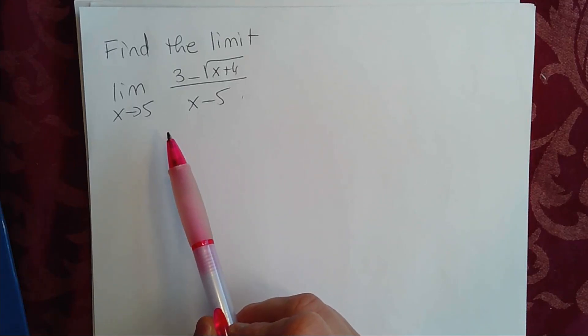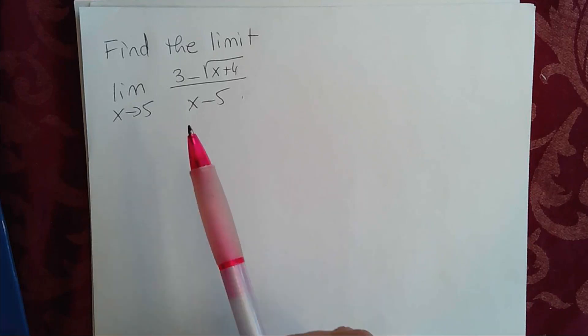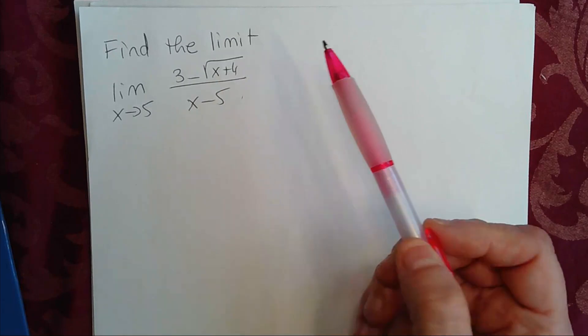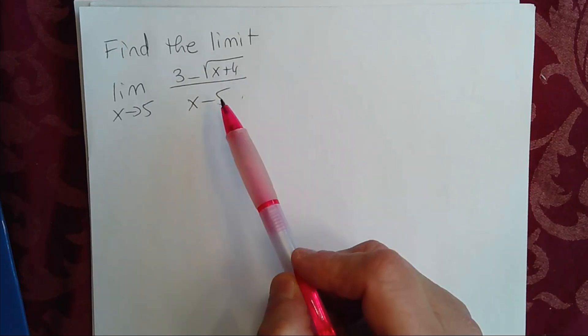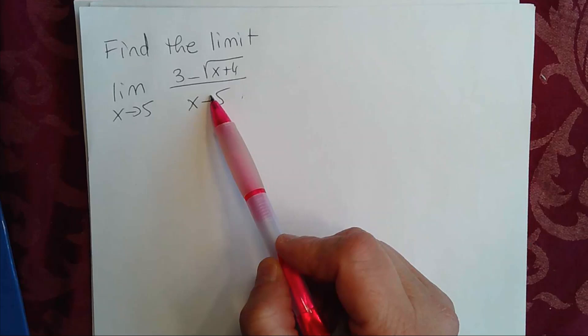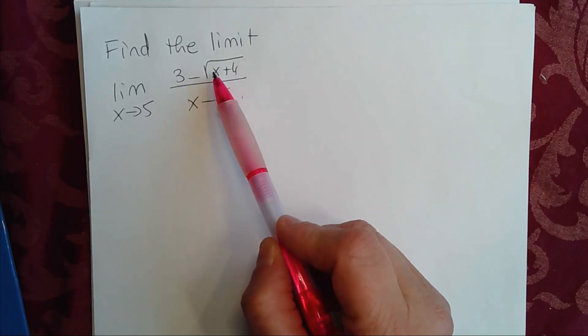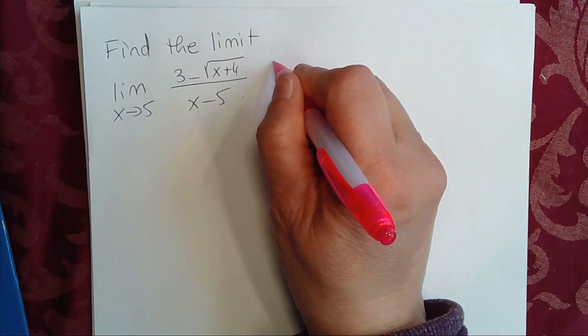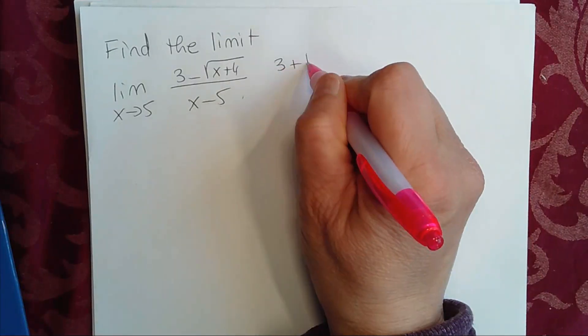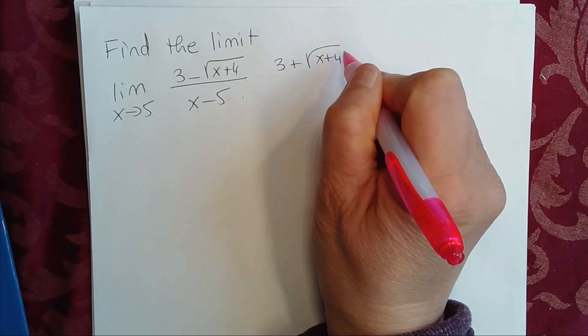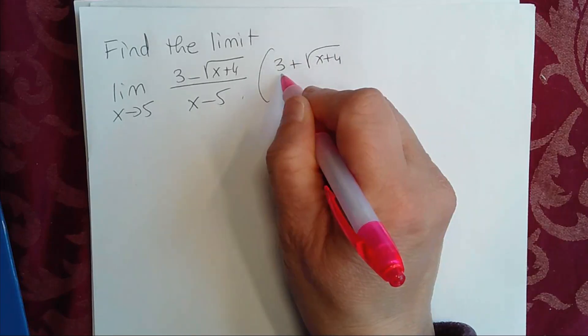So what we can do is find the limit in many ways. One of them is multiply by the conjugate. The conjugate of 3 minus square root of x plus 4 is 3 plus square root of x plus 4. And whatever you multiply in the numerator, you have to multiply in the denominator.